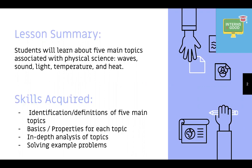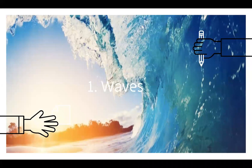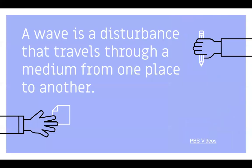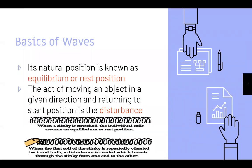So let's get started. First: waves. What is a wave? A wave is a disturbance that travels through a medium from one place to another. There are PBS videos in the description if you want a deeper understanding of waves. The basics of waves: a wave's natural position is known as equilibrium, or rest position.